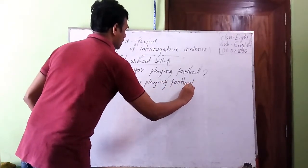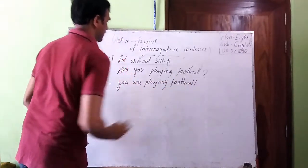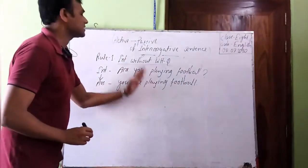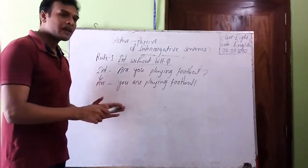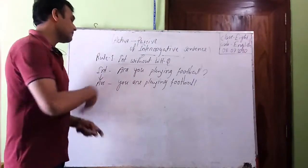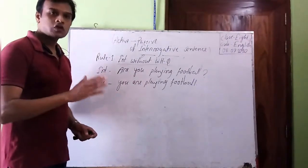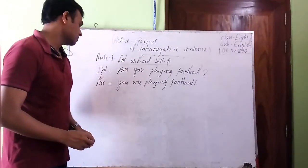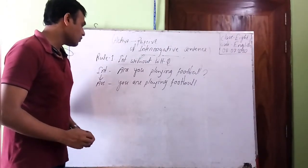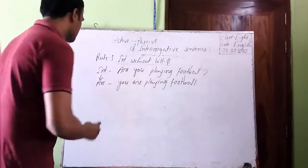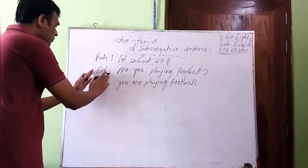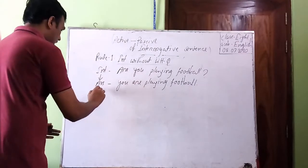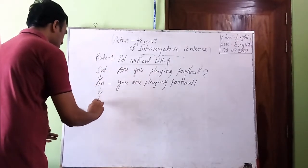This is now an assertive sentence, and you can make it passive according to the rules of assertive sentences that we learnt in our previous class. So now we will make it passive. First we turn the interrogative into assertive, and then we make it a passive sentence.